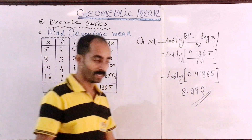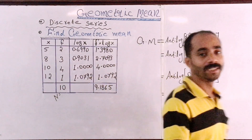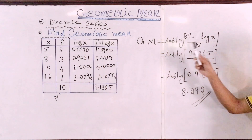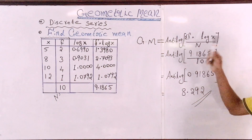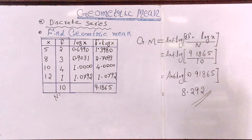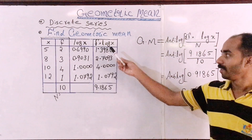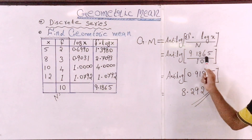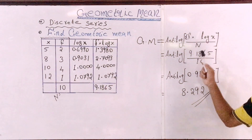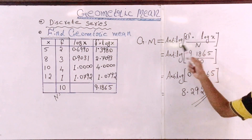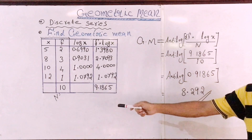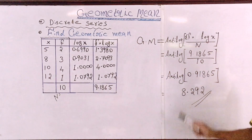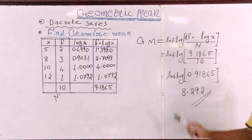The sum of F into log X is 9.1865. Applying the formula: Antilog of sigma F into log X divided by N, where the frequency sum N is 10.